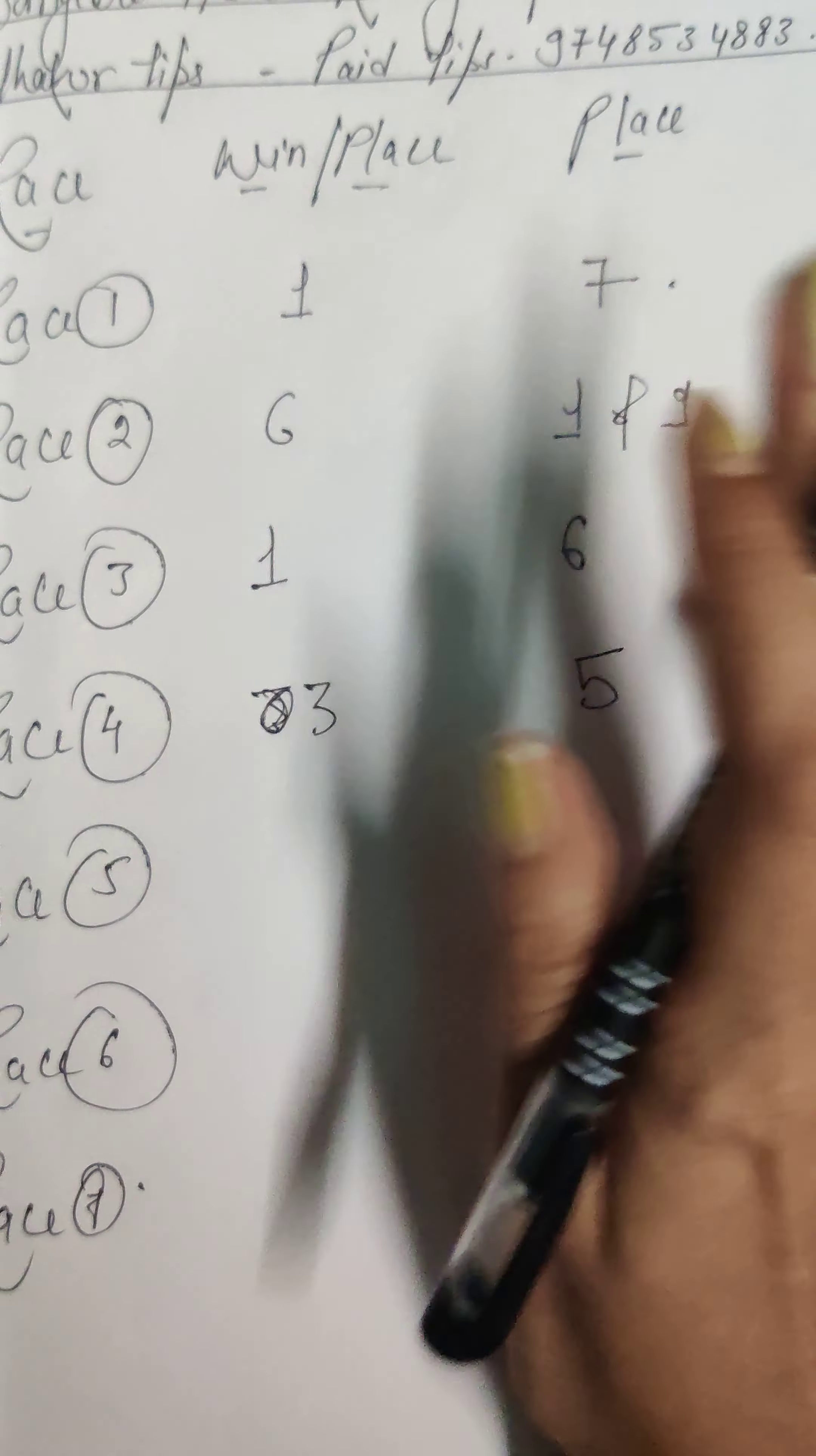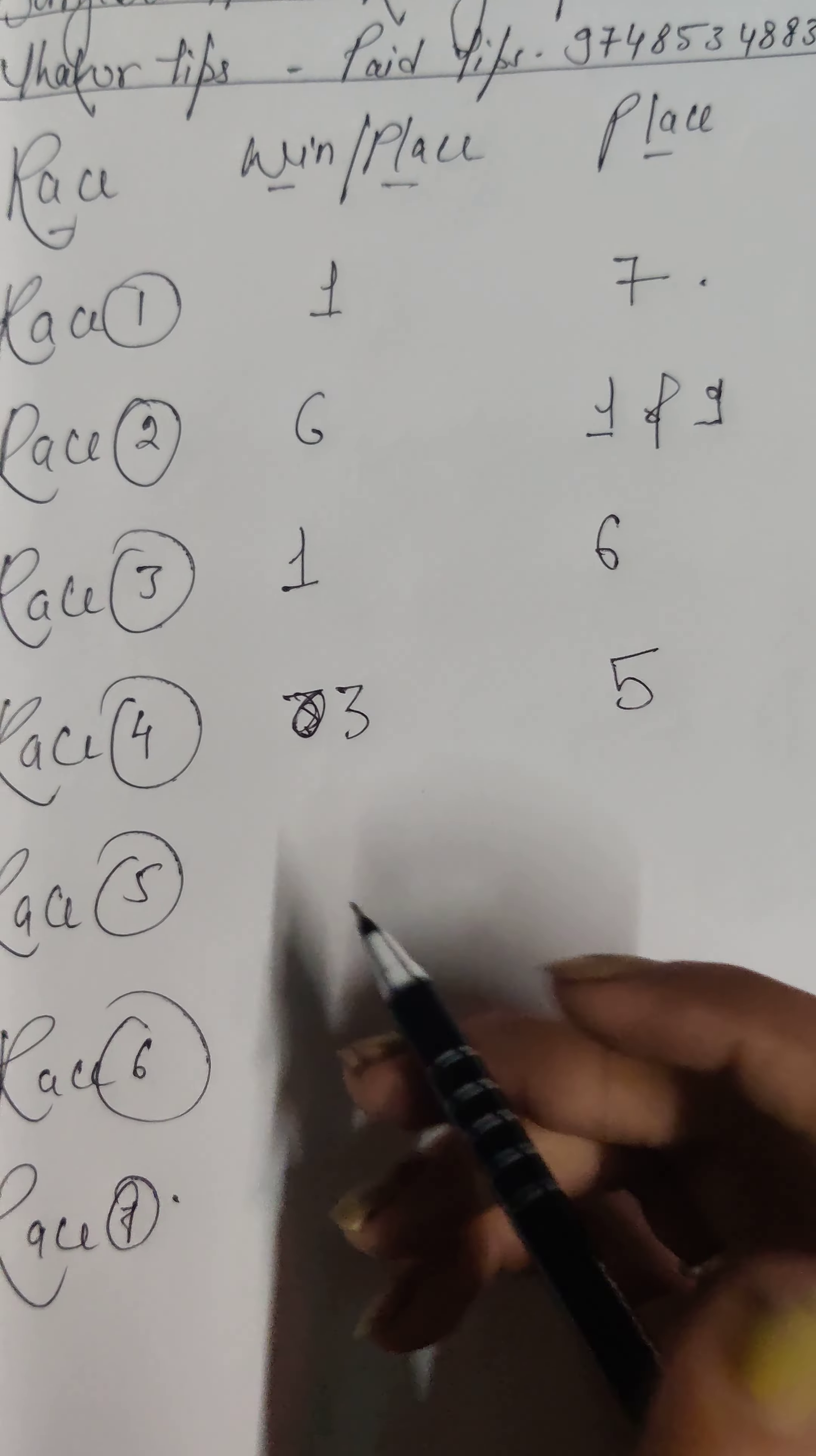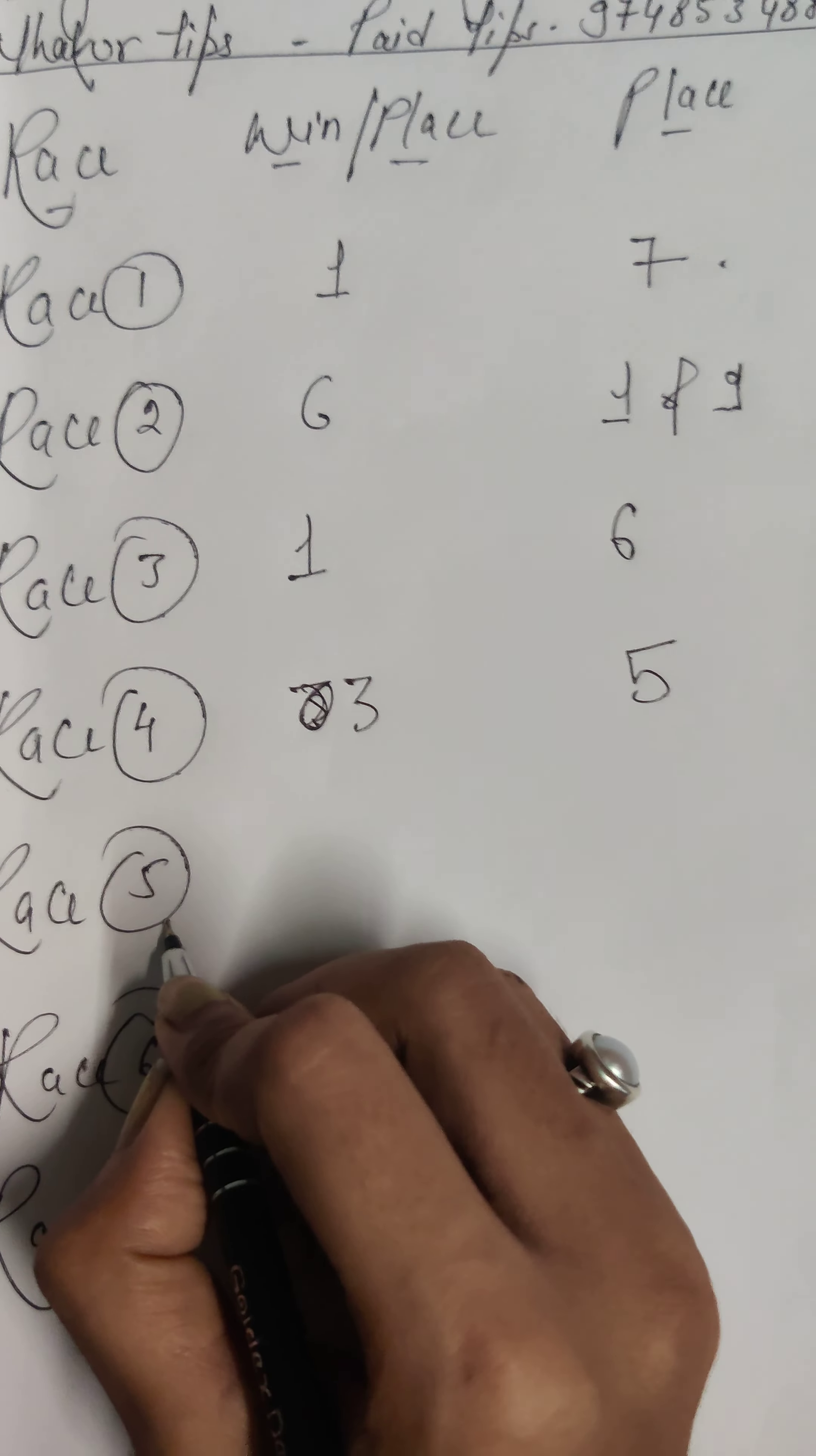1, 6, 6, 1, 9, 1, 7, 3, 5. Okay. Race number 5, my first choice is horse number 5, and my second choice is horse number 5.